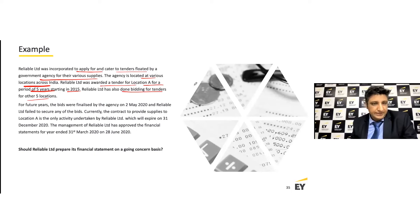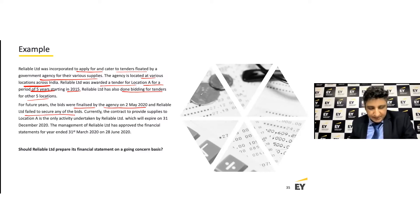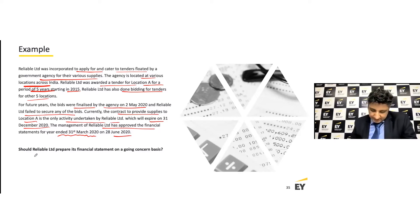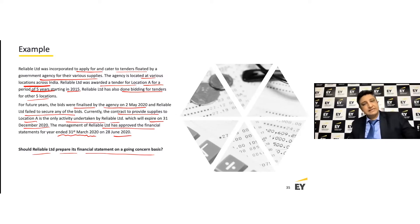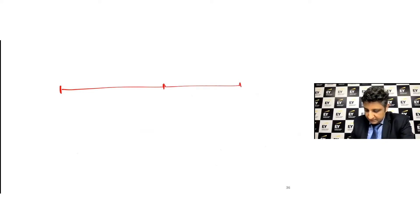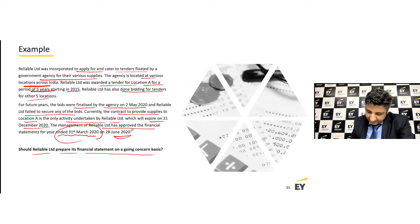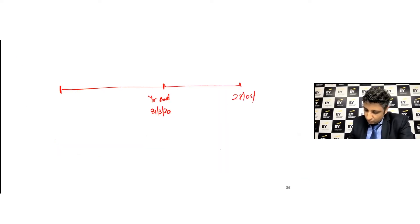It also bid for several other locations for future years. The bid was finalized by the agency on 2nd May 2020, and the company failed to secure any of those bids. Currently, the only contract — providing supplies at Location A — expires on 31st December 2020. Management approved the financial statements for the year ended 31st March 2020 on 28th June 2020. The question is: should Reliable Limited present its financial statements on a going concern basis? The reporting date is 31st March 2020 and the date of approval is 28th June 2020.